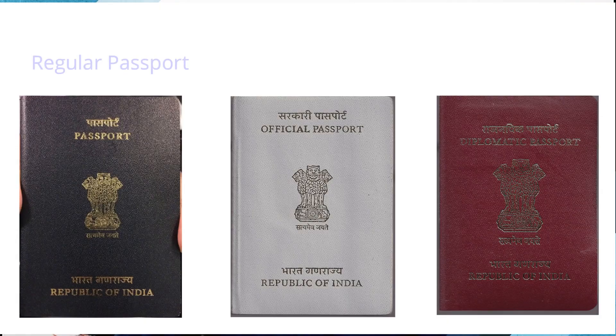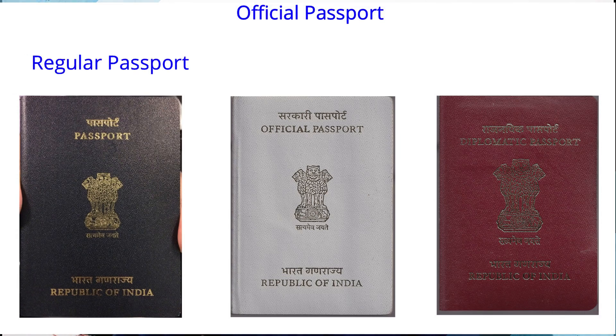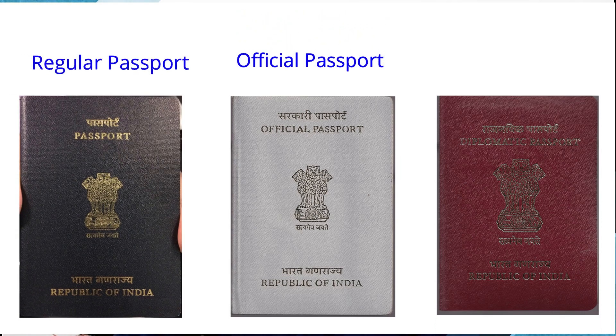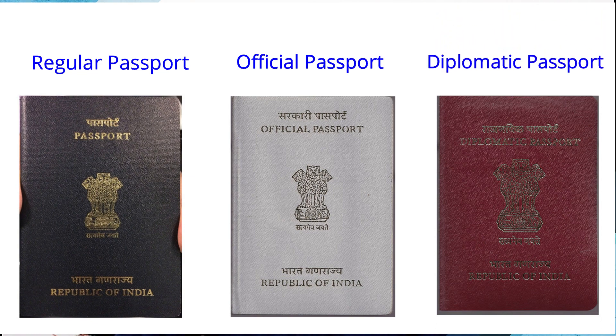So, we know what a passport is and what is happening. This passport comes in three types: the first is a regular or normal passport, the second is an official passport, and the third is a diplomatic passport.